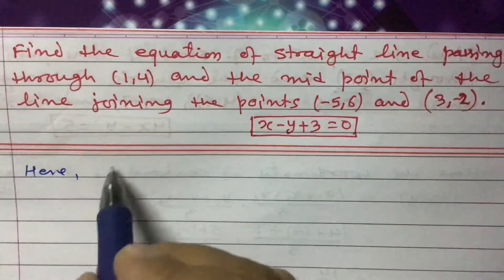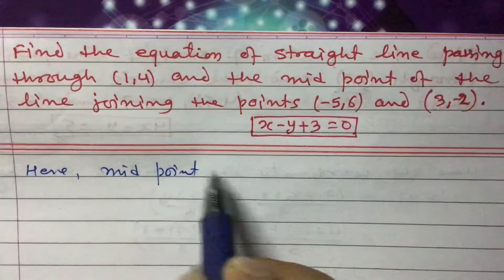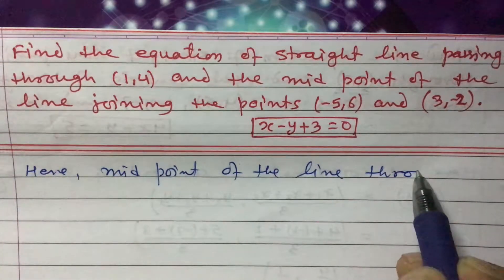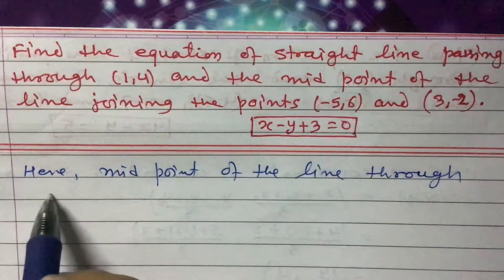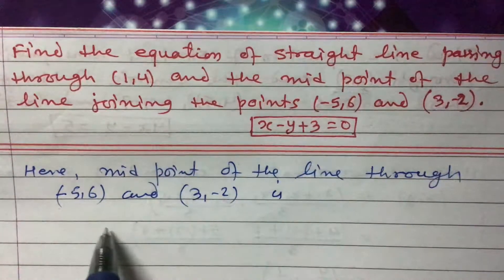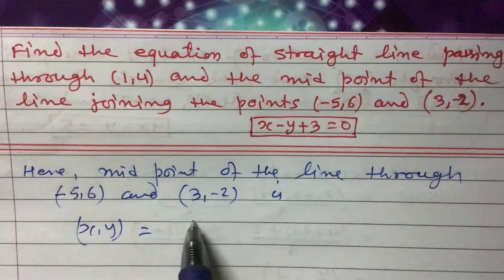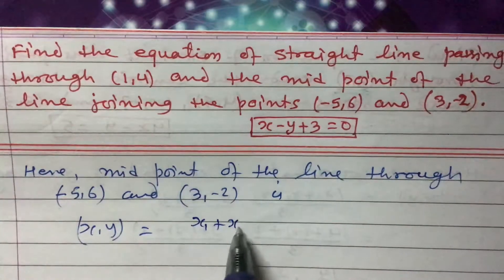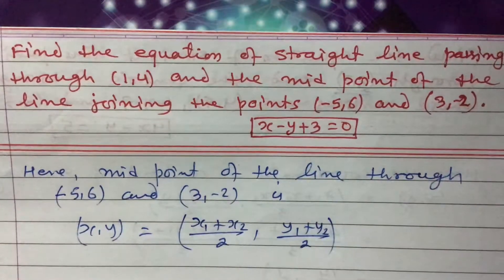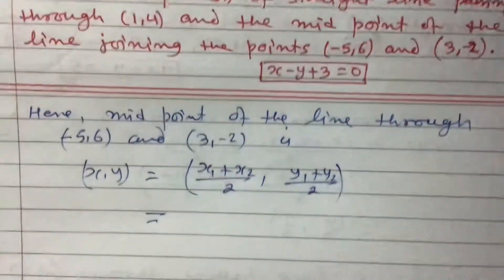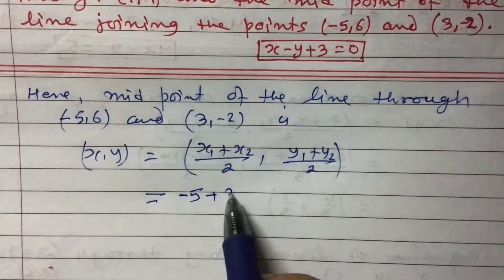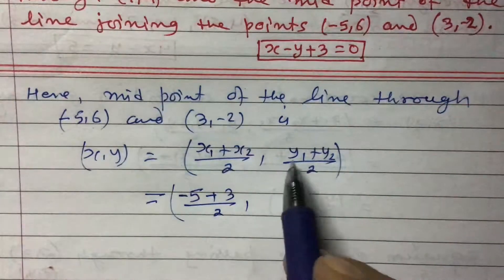To find the midpoint of the line through the two points (-5, 6) and (3, -2), we use the midpoint formula: (x, y) equals (x1 plus x2) divided by 2, comma (y1 plus y2) divided by 2. So here, x1 is -5, x2 is 3, y1 is 6, and y2 is -2.